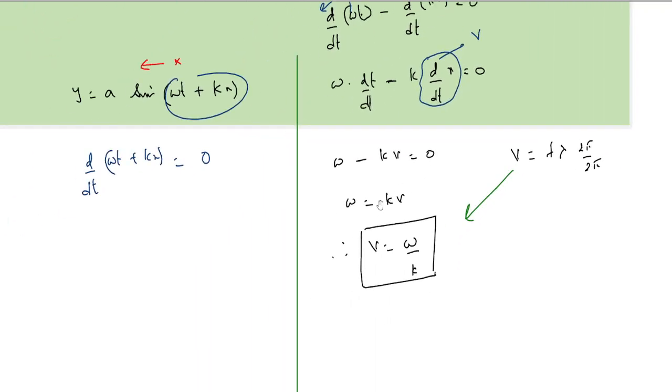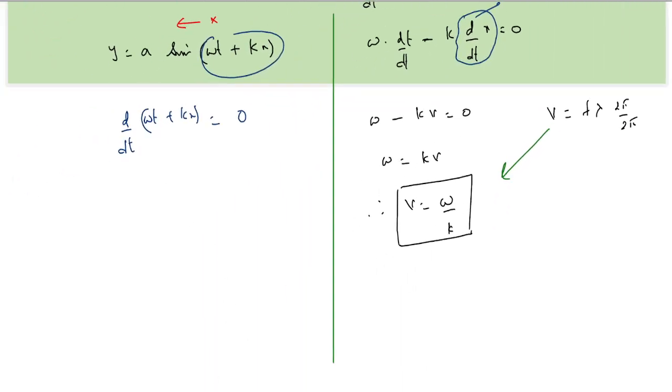So because of which this term becomes 0, expand this: d by dt into omega plus k into dx by dt, that is 0. This term is 1, so omega plus k into v is equal to 0. From this we get v is equal to minus omega by k, which just means that the velocity is negative.